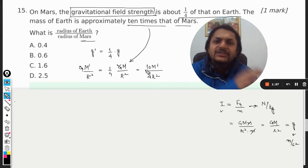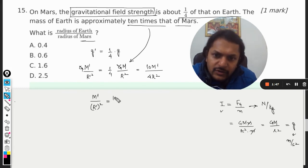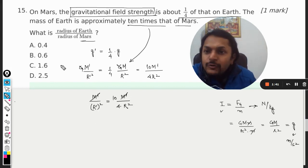From here what we have is R dash square equals 10 M dash divided by 4 into R square. M dash cancels out. What we want is radius of Earth divided by radius of Mars, so I have to cross multiply it.